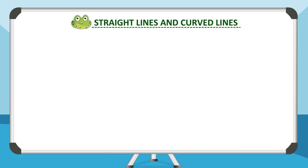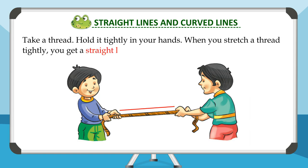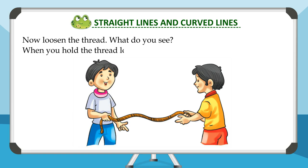Straight lines and curved lines. Take a thread and hold it tightly in your hands. When you stretch a thread tightly, you get a straight line. Now loosen the thread. What do you see? When you hold the thread loosely, you get a curved line.